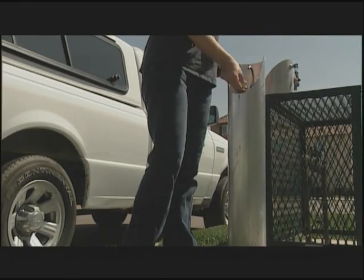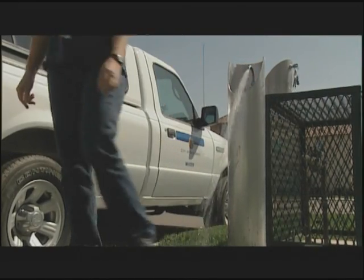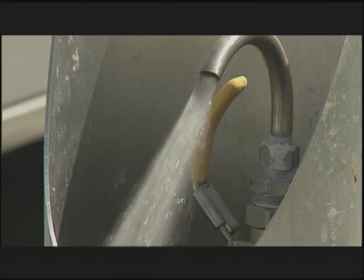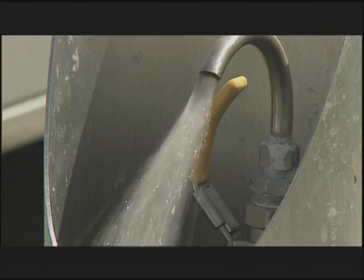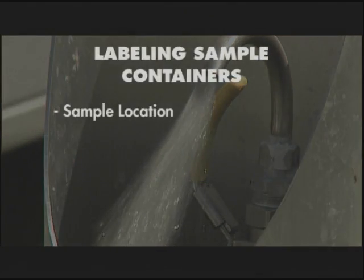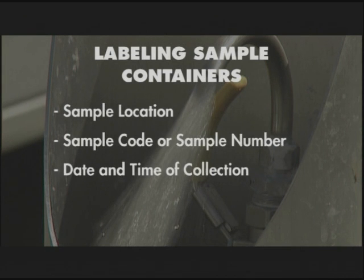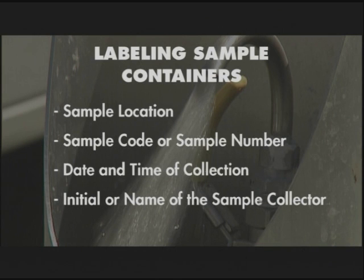Sampling typically, but not always, calls for the tap to be flushed before the sample is taken. If this is the case, label the container while the tap is running as follows: sample location, sample code or sample number, date and time of collection, initials or name of the sample collector, and type of analysis needed.